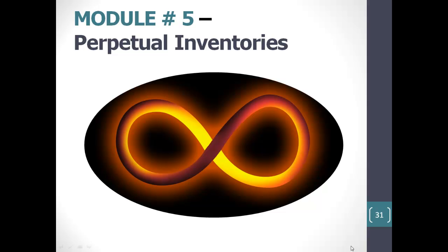Let's go ahead and get into our last module: perpetual inventories. The idea of a perpetual inventory is that your inventory records are accurate every single day — you've discovered the problems in your system, corrected them, and continuously improve the system so that all items are going through a system that works. It doesn't matter if an item is expensive or inexpensive, fast mover or slow mover, long lead time or short lead time — it just simply doesn't matter because it's going through a system that works.